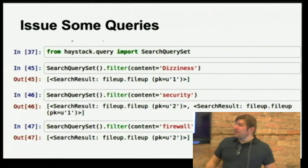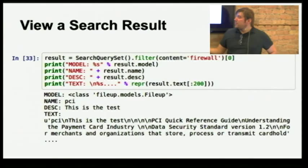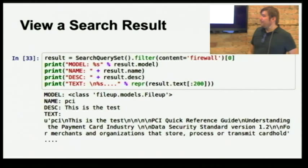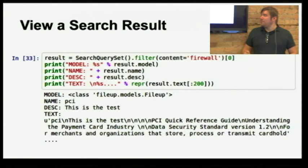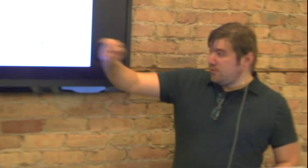We can look at one of the search results to prove we're getting that search text out — printing the name, description, and text fields for the PCI reference guide. So it is indexing correctly. This talk isn't really meant to show how to use Haystack in depth — Haystack has great documentation. You can iterate through a SearchQuerySet on a Django template, and Django has tools that make that process mostly automated. The key point is that Haystack is now aware of this text and returns results based on the contents of uploaded documents.